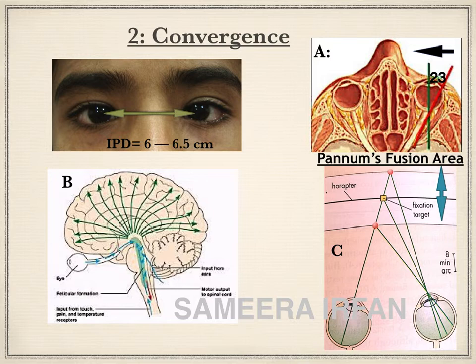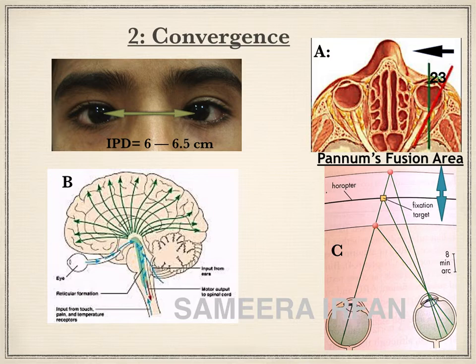The closer the object is to the eyes, the greater the effort of convergence — increasing from about 23 degrees for far objects to about 60 degrees for near. An intact convergence at birth is extremely important for developing binocularity, as it enables both eyes to look at the same object at all distances. The horizontal distance between the pupils is called the interpupillary distance, about 6 to 6.5 cm in adults. This results in the right eye seeing more of the right side and the left eye more of the left side of an object, creating two slightly dissimilar images — called retinal disparity.